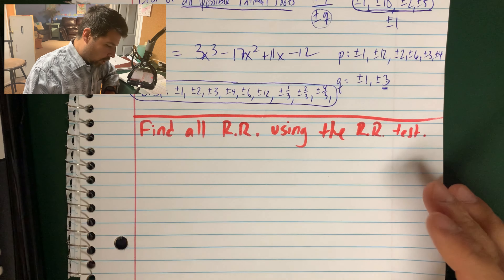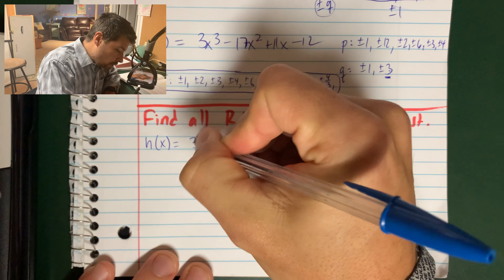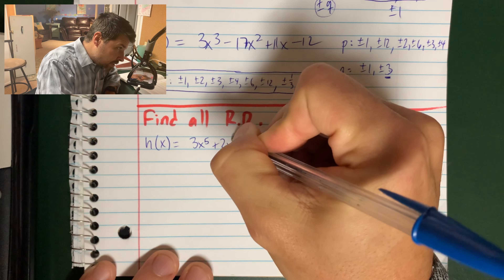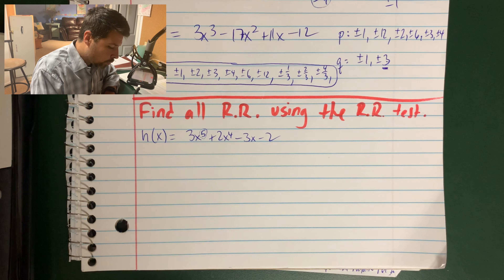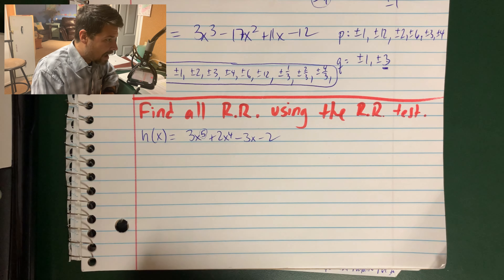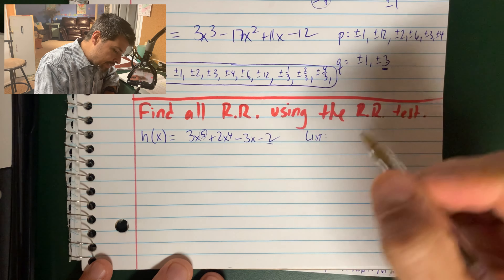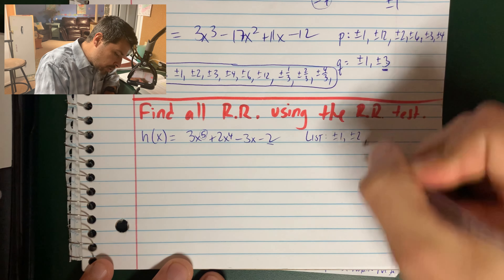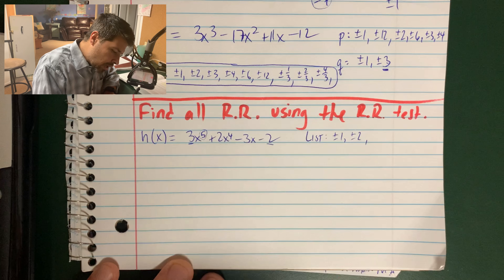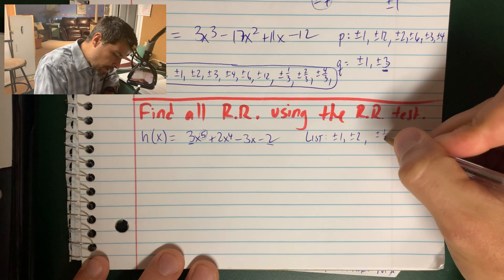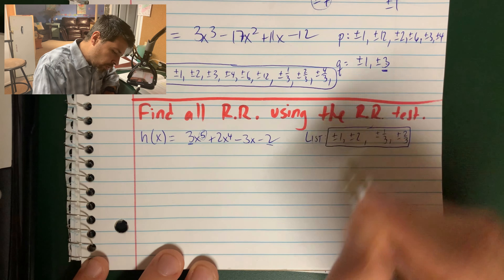As an example, we're going to find all of the rational roots using the rational root test. H of x is going to be 3x to the fifth plus 2x to the fourth minus 3x minus 2. I do know that I have 5 possible real roots. Let's make our list. Factors of the constant 2: plus or minus 1, plus or minus 2. My leading coefficient is 3, so I need to put all these values over plus or minus 3, giving plus or minus 1 third and plus or minus 2 thirds. There are 8 possible rational roots for this function.